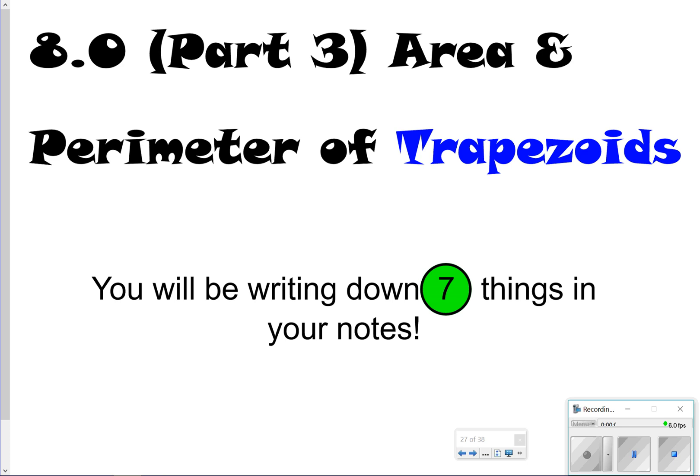Thanks for tuning in. We're going to be looking specifically at lesson 8.0 part 3, and this is going to focus on how to find the area and perimeter of trapezoids. Today there's going to be seven things written down in your notes. Let's go ahead and get started.